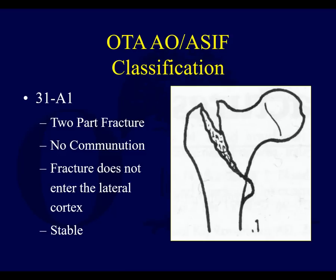A couple of ways to think about this: stable versus unstable intertrochanteric fractures is a nice framework. You should be aware of AO classification, as this comes up a lot in papers. 31A1 is a two-part fracture without comminution — what you would consider a stable intertrochanteric fracture. The fracture doesn't enter the lateral cortex, meaning this lateral wall is not breached, which is very important. You have to look critically at your X-rays to confirm this, as an externally rotated film may make it hard to tell.